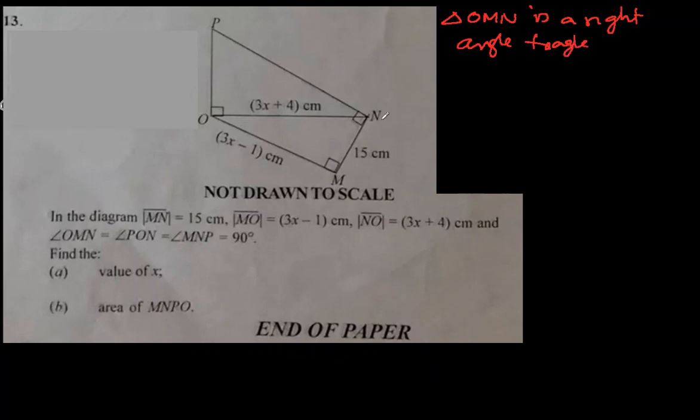Triangle OMN is a right-angled triangle. Since this is a right-angled triangle, we can use Pythagorean theorem in it. It will be a square plus b square equal to c square. This is the longest line. The line which is opposite to 90 degree is always the hypotenuse and that's why I know that is the longest line. So this square plus this square will give us this square.